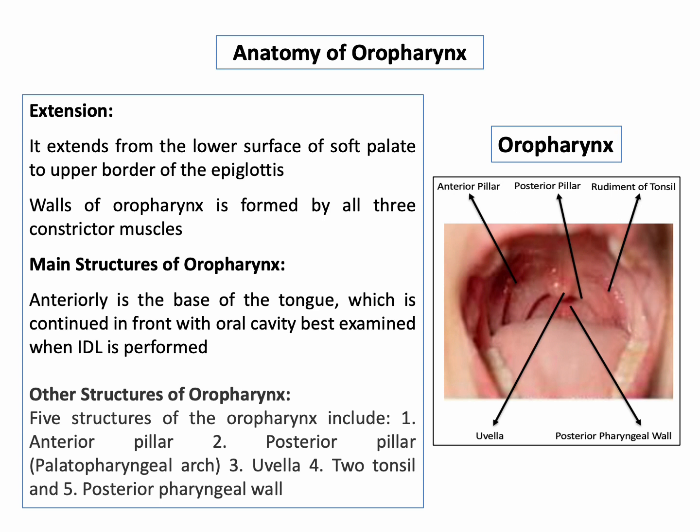Looking at the anatomy of the oropharynx: it extends from the lower surface of the soft palate to the upper border of the epiglottis. The wall of the oropharynx is formed by all three constrictor muscles. The main structure is the base of the tongue, which continues in front with the oral cavity and is best examined with indirect laryngoscopy.